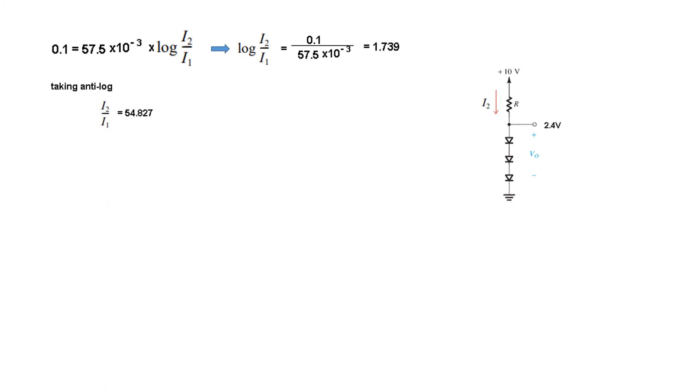Taking antilog on both sides, I2 over I1 equals antilog of 1.739, which is 54.827. So I2 equals 54.827 times I1. I1 is 1 milliampere, therefore I2 is 54.827 milliamperes.